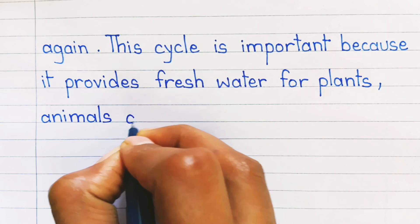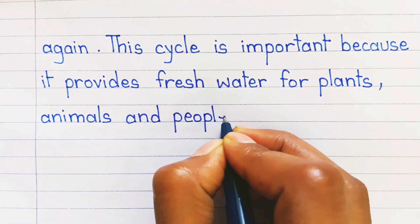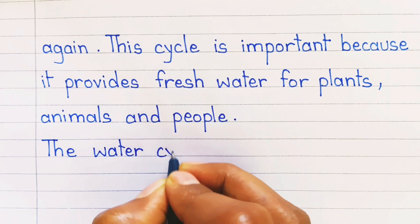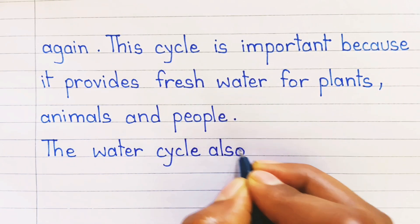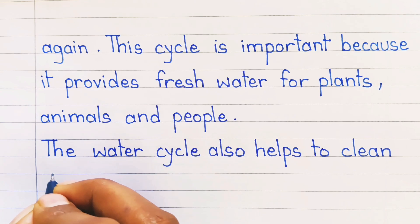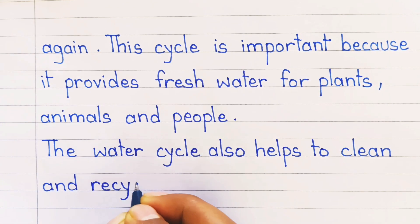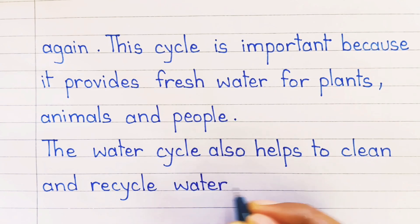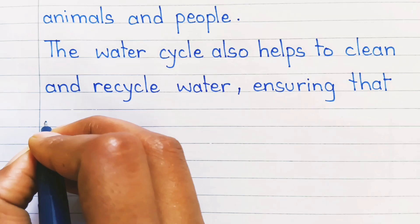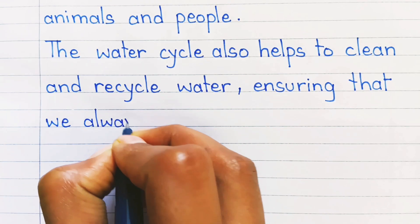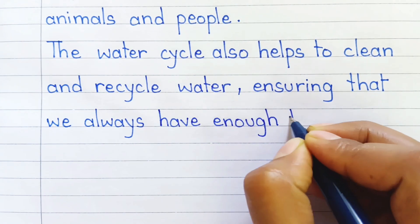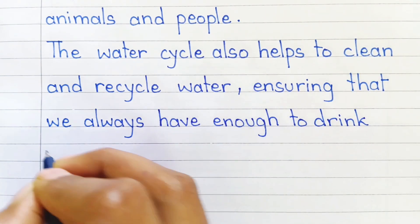This cycle is important because it provides fresh water for plants, animals, and people. The water cycle also helps to clean and recycle water, ensuring that we always have enough to drink and use.